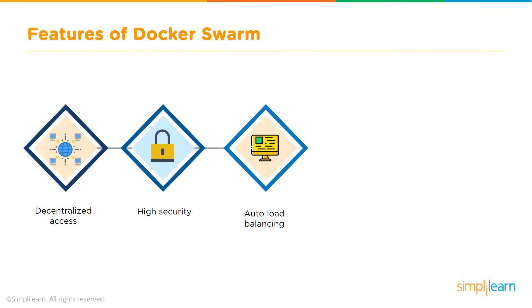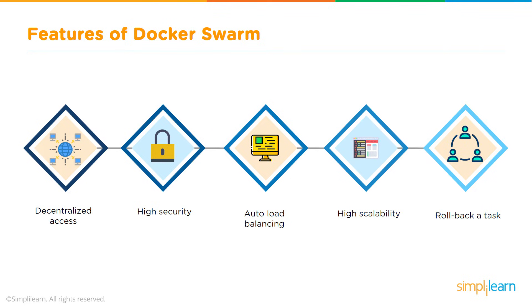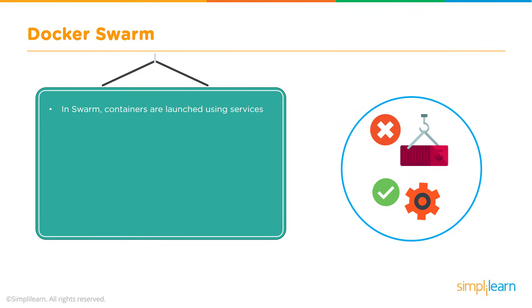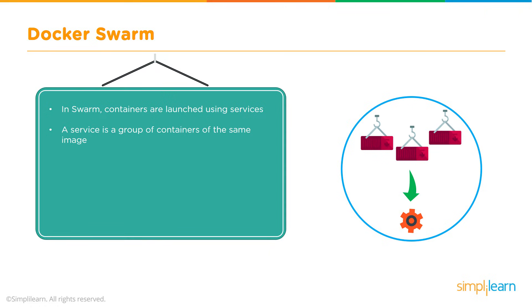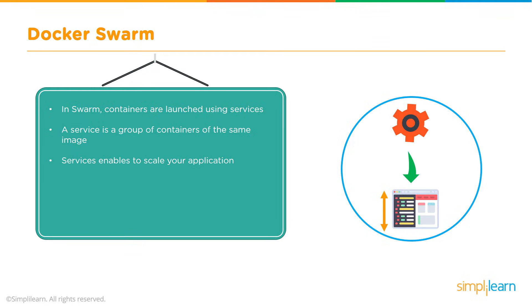There is also auto load balancing within your environment, which you can script into how you structure your Swarm. That load balancing allows you to convert the Swarm into a highly scalable infrastructure. A rollback task feature lets you roll back environments to previous safe states if something breaks. Each container is controlled using REST services, and each service contains a group of containers of the same image, allowing you to scale appropriately to demand — either geo or demand based.